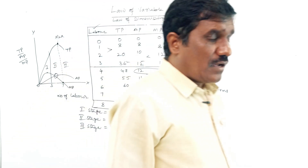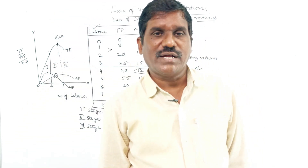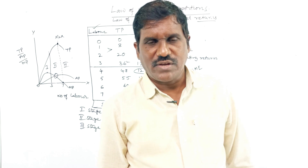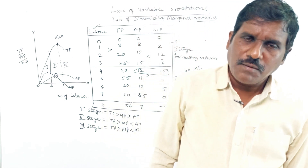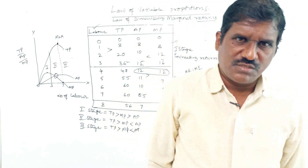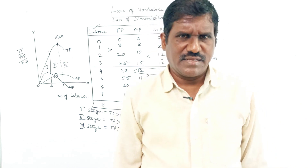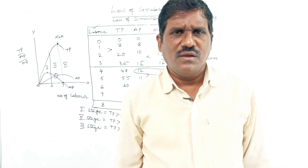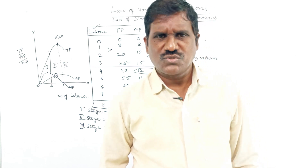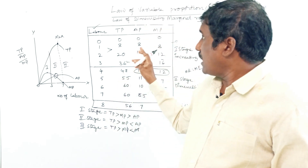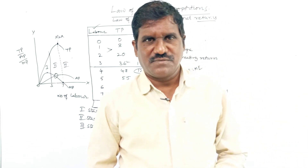This is the law of diminishing marginal returns, also known as the law of variable proportions. It is applicable most in the agriculture sector and the production sector. This is the law of variable proportions, Part 2.